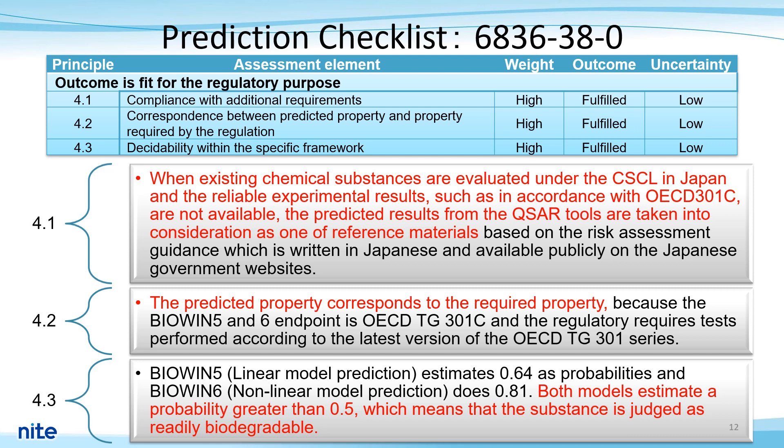4.3 is the item to check if the predicted value is within the threshold and at the required level of confidence, especially when a threshold exists in the regulation. In this case, BioWin 5 estimated a probability of 0.64 and BioWin 6 estimated a probability of 0.80. In both models, the probabilities were estimated to be greater than 0.5, indicating that the substance under analysis is readily biodegradable. This result could be considered desirable. Therefore, outcome was set to fulfilled and uncertainty to low.